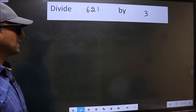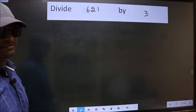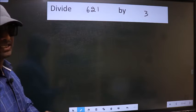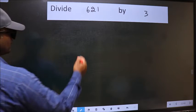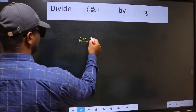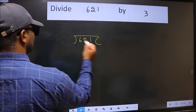Divide 621 by 3. To do this division, we should frame it in this way: 621 and 3 here.